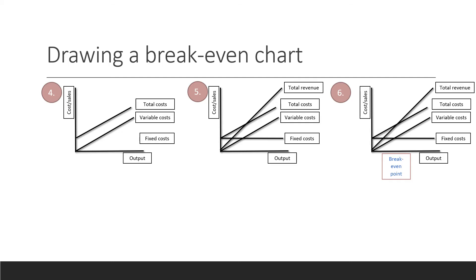And in the last step, step six, you need to identify the break-even point. Identify where the total cost line crosses the total revenue line. So you draw a line downwards to the axes and read off the break-even level of output.